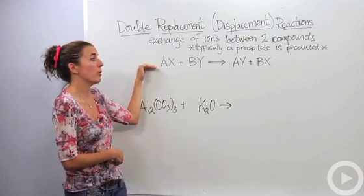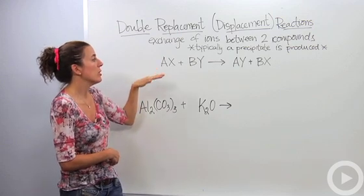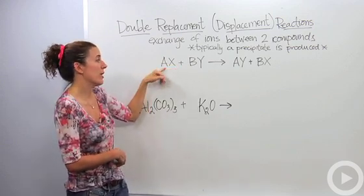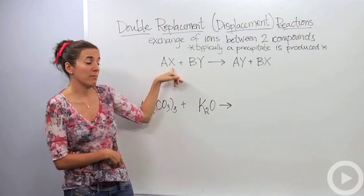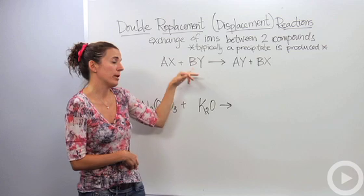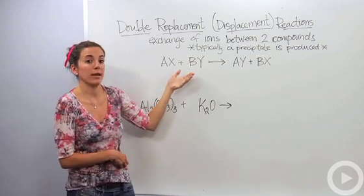All right, so here's a skeletal equation of what a double replacement reaction looks like. We have AX, and this happens in ionic compounds. So we have AX, and we know that A is a metal, and X is a non-metal, plus BY. Again, B is the metal, Y is the non-metal. Don't forget, metals always come first in ionic equations.